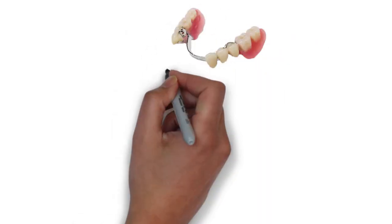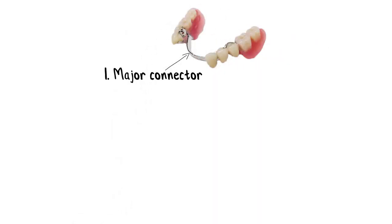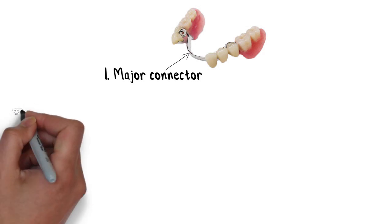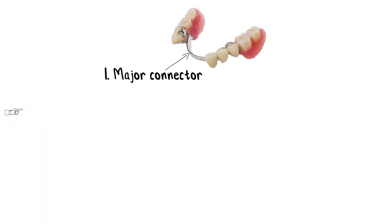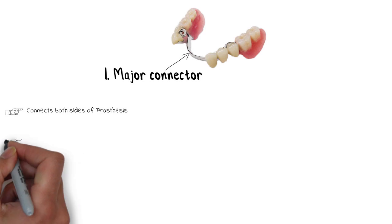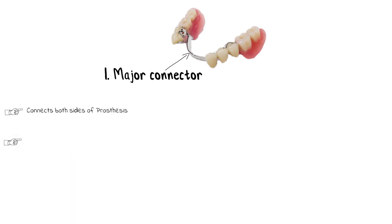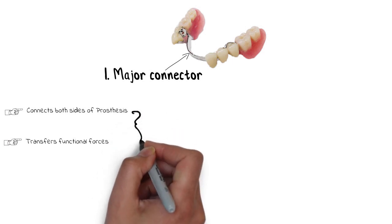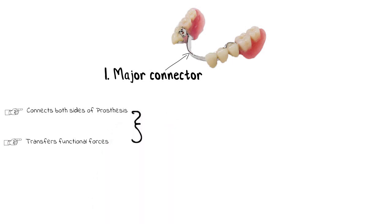The first part is the major connector. A removable partial denture should ideally extend to both sides of the arch to give it a more stable design, and the component that connects the two main parts of the denture is known as the major connector. It connects both sides of the prosthesis and transfers the functional forces applied on the artificial teeth and denture base, distributing the forces of mastication equally along the entire arch, providing optimum stability to the prosthesis.